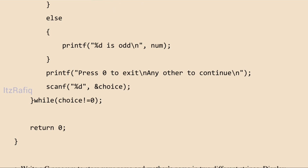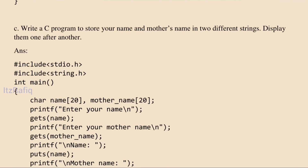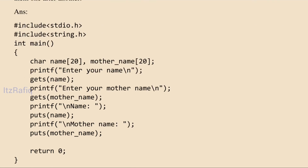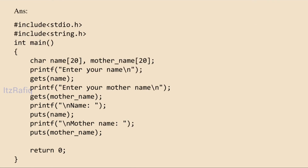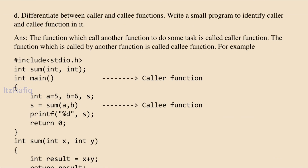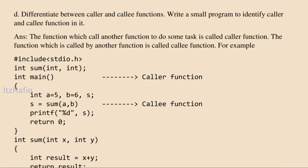Write a C program to store your name and your mother's name in two different strings and display them one after another. We declare two character arrays: name with max size 20 and mother_name with max size 20. Using gets() we read the name and mother's name. We also need string.h header file to use gets and puts functions. Then we use puts() to display both name and mother name in sequence. At last, return 0.